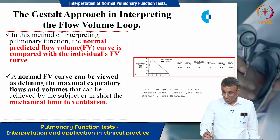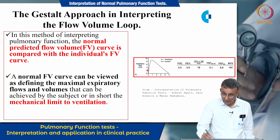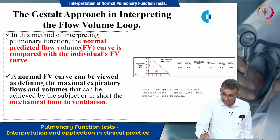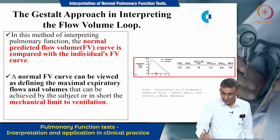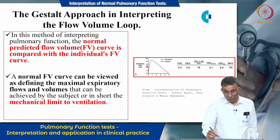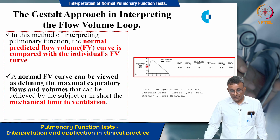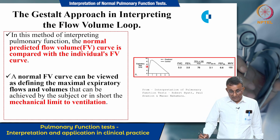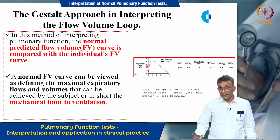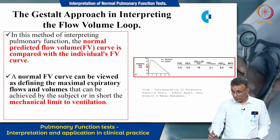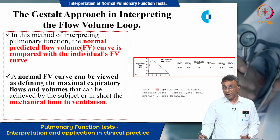Here you can see a normal flow volume loop. Always note the area below the outline of the curve, as this area represents the functional respiratory reserve of a person — this must always be kept in mind. A normal flow volume curve defines the maximal expiratory flows and volumes and, in short, represents the mechanical limit to ventilation. When we interpret a flow volume curve, we are assessing the mechanical limit of the person's ventilation.